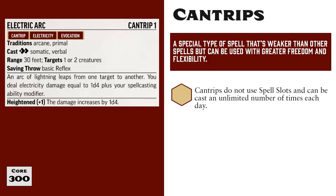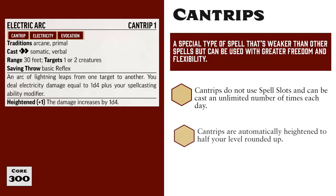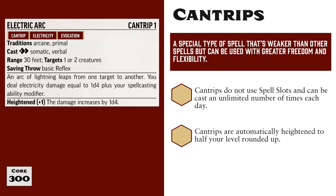The second key feature of cantrips is that they are automatically heightened to half the caster's level rounded up. In the case of most spellcasting classes, this means you can cast your cantrips at the same level as your highest level spell slot. So if third level spells are the highest level spells you can cast, then you cast your cantrips at third level too. That makes it easy to remember, but this may not apply if you don't belong to one of the full spellcasting classes, or if you receive your spells from an archetype or some other source.